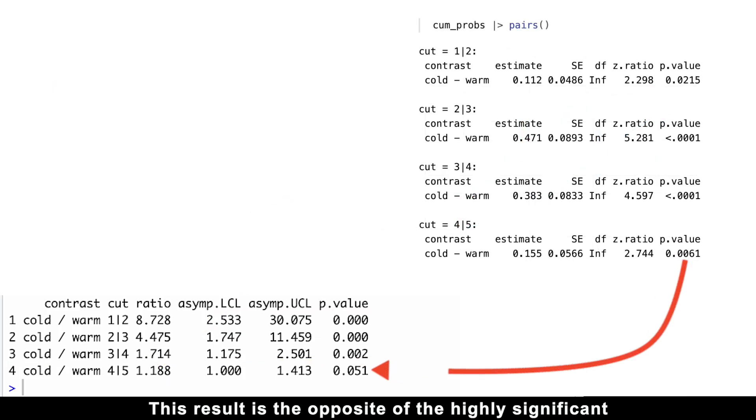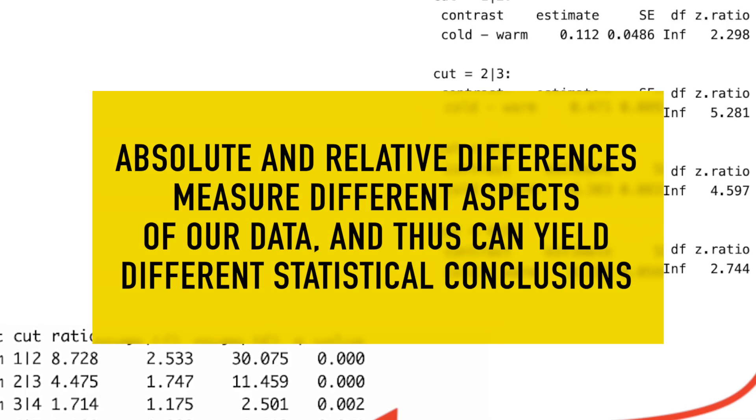And it's not statistically significant. This result is the opposite of the highly significant absolute difference we found previously. It highlights that absolute and relative differences measure different aspects of our data, and thus can yield different statistical conclusions. And that's okay.